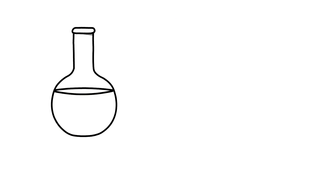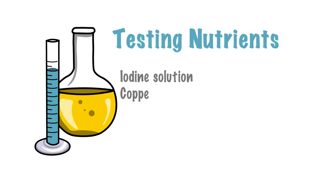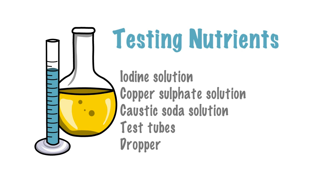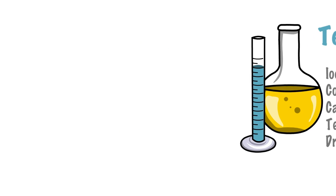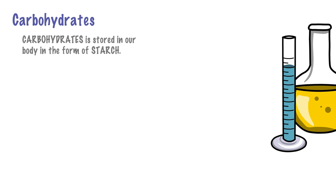Now let us explore how we test the presence of nutrients through simple experiments. To conduct these experiments, you will need an iodine solution, which can simply be prepared by adding a tincture of iodine in a test tube that is already half filled with water. You will also need a copper sulfate solution, prepared by dissolving 2 grams of copper sulfate in 100 milliliters of water, and a caustic soda solution prepared by dissolving 10 grams of caustic soda in 100 ml of water. Let's start with the experiment to test the presence of carbohydrates. In our body, carbohydrates are stored in the form of starch and sugar, so that is what we will be looking for in this experiment.